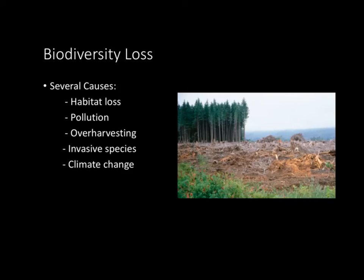Now let's take a look at biodiversity loss. There are several main causes to investigate. The first and greatest cause is habitat loss, which can be direct outright habitat loss — such as clear-cutting a forest — or something such as habitat fragmentation. When looking at pollution, air pollution and water pollution are major causes of losing biodiversity. For example, eutrophication can occur and an entire pond ecosystem is killed off, and that biodiversity is gone.